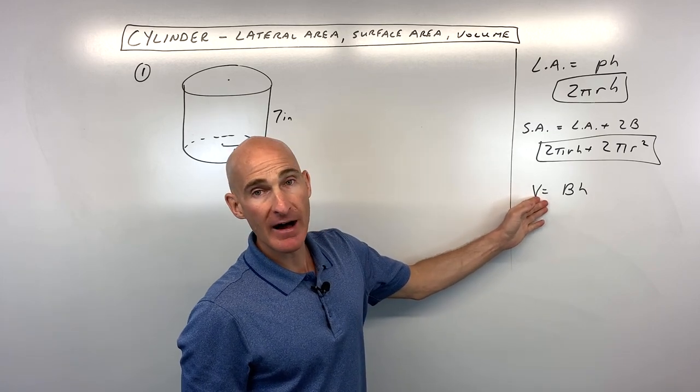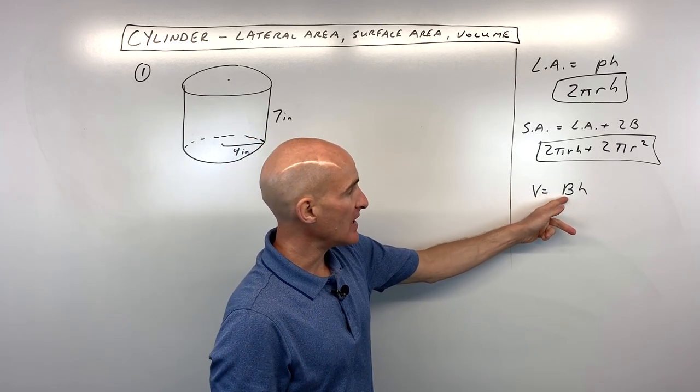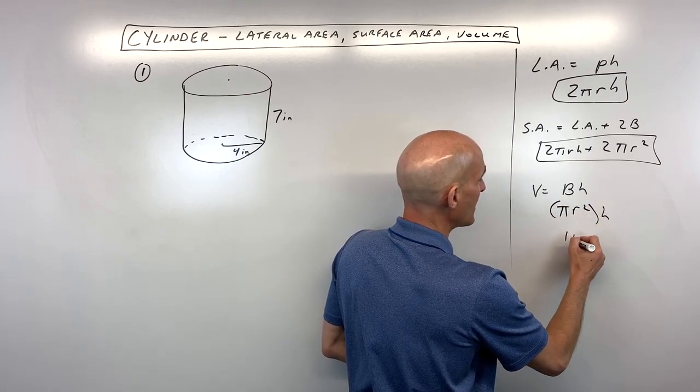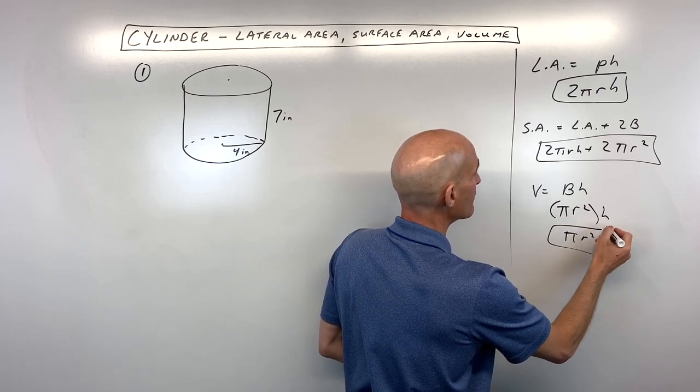And then the last thing is to find the volume. That's the area of the base, but of course, we said the base is a circle, so that's πr² times the height. So we could think of πr²h for volume.